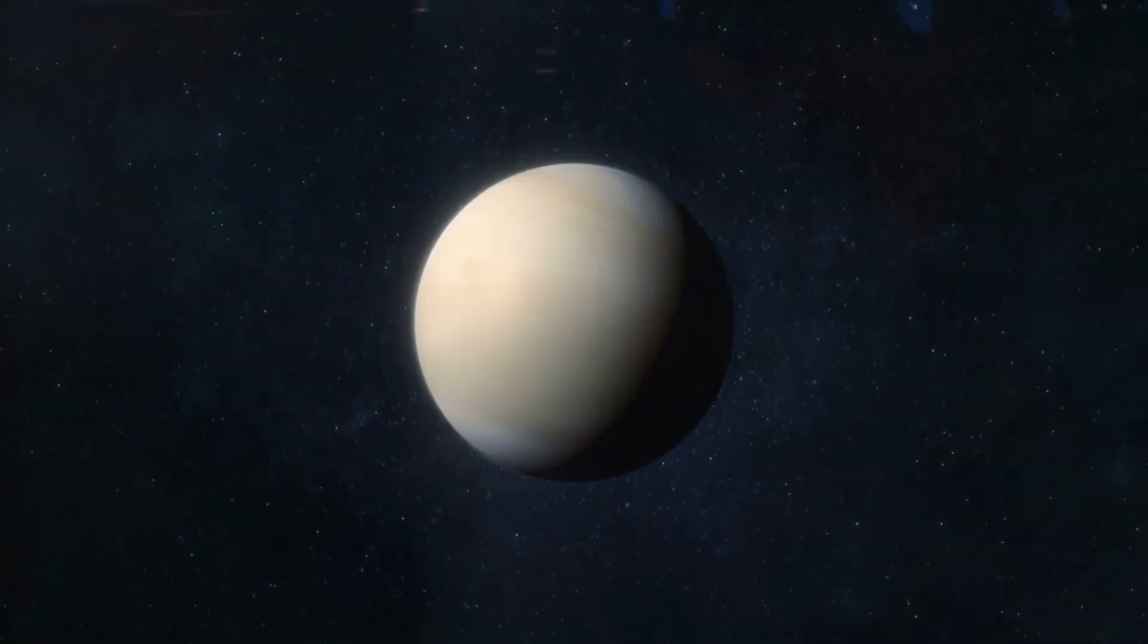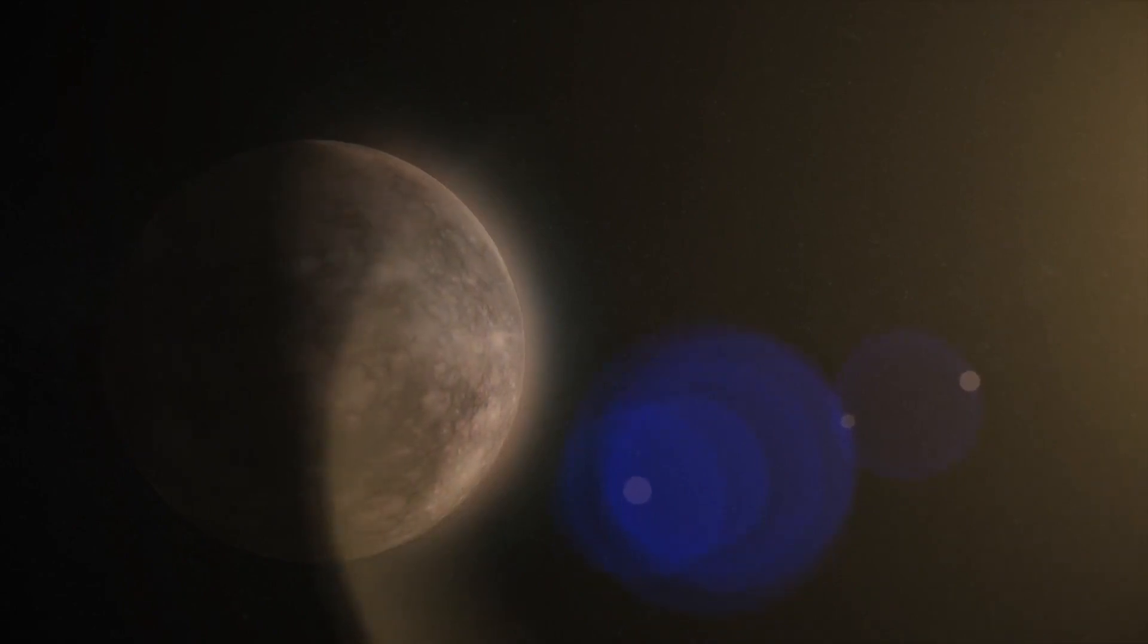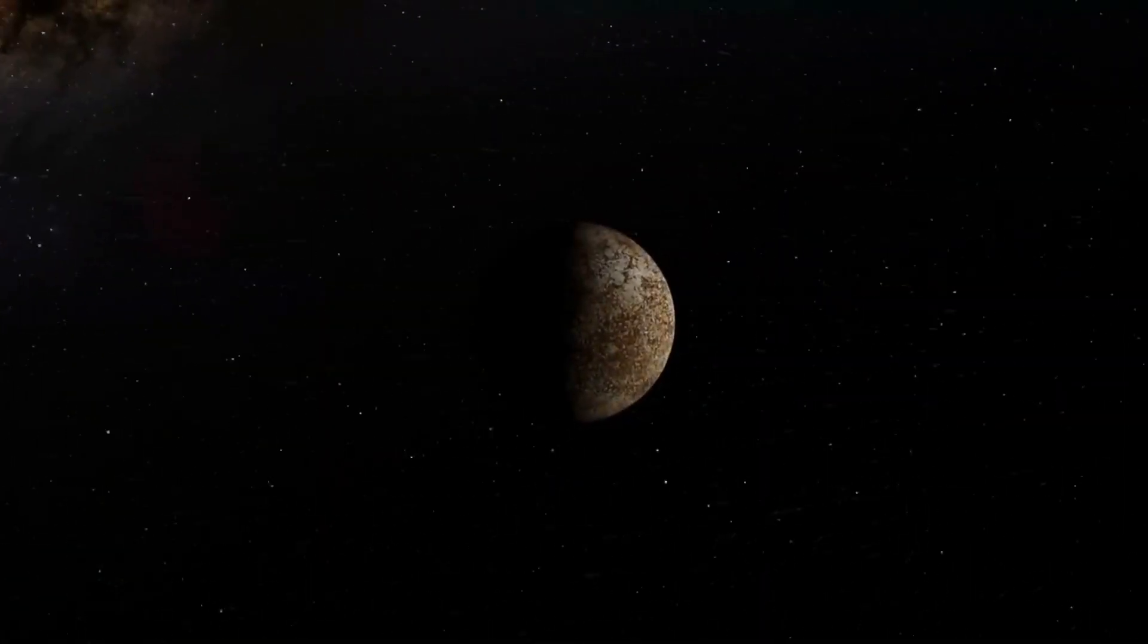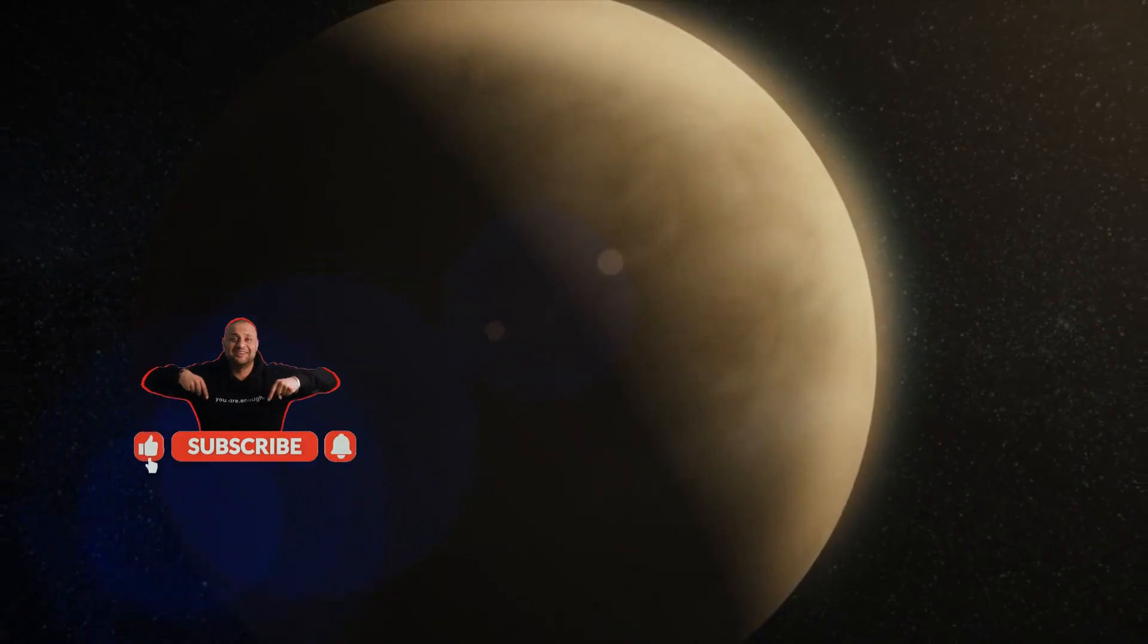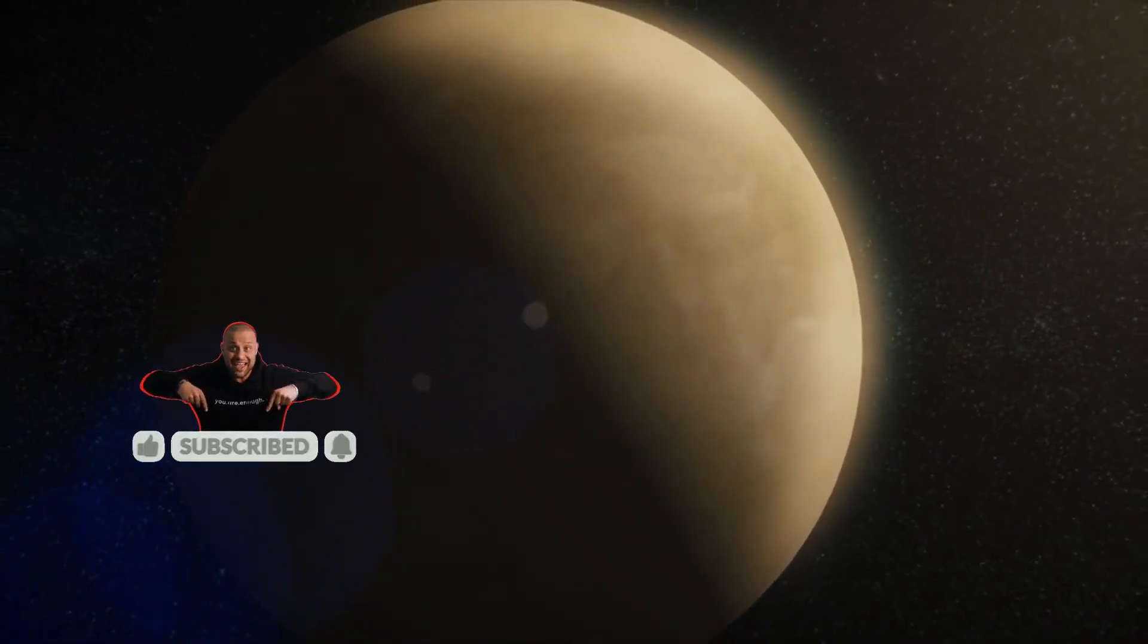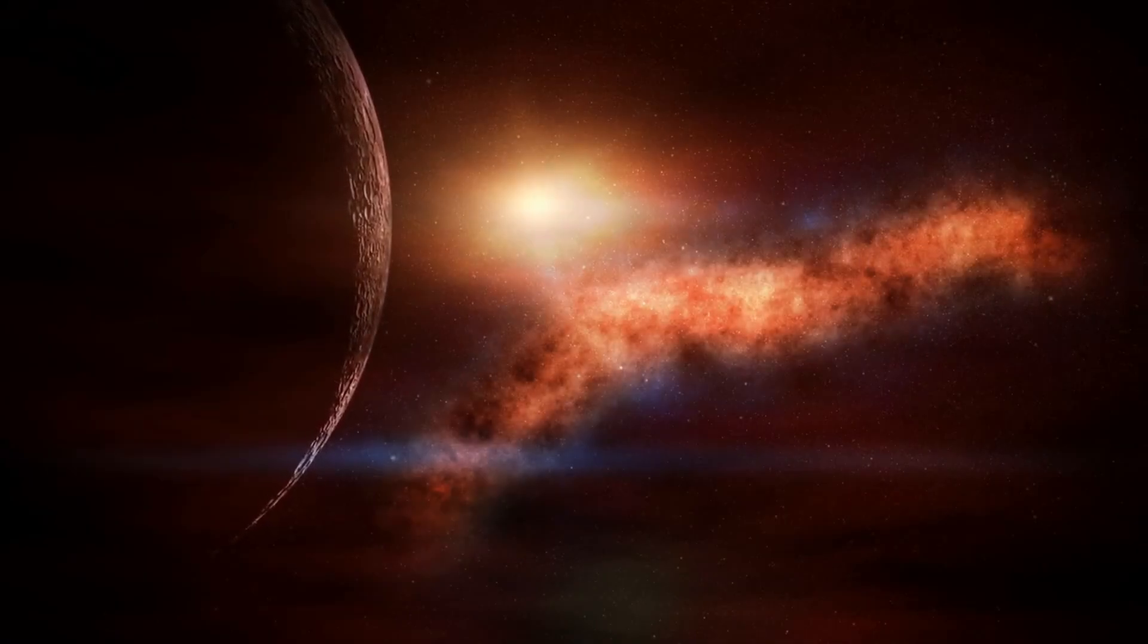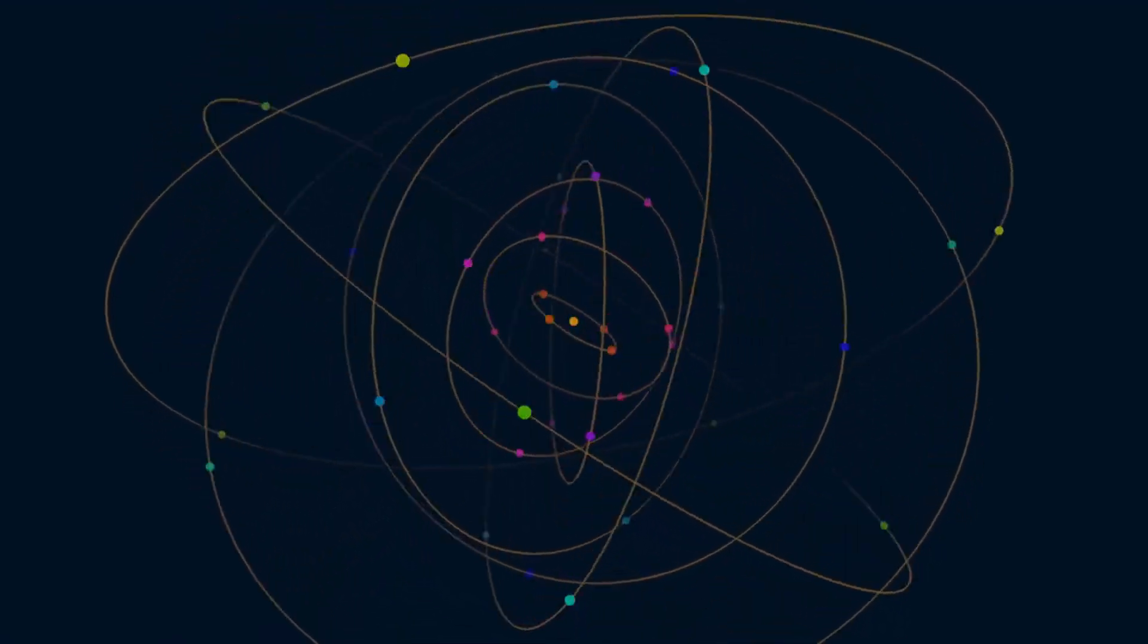At first glance, it seems like an impossible event. Mercury, the smallest and fastest planet, orbits the Sun at an incredible speed, completing a full revolution every 88 Earth days. Venus, the second planet from the Sun, is a hot, toxic world covered by thick clouds of sulfuric acid. So what could bring these two worlds together when they appear to live their lives in stable orbits?